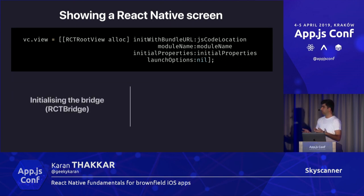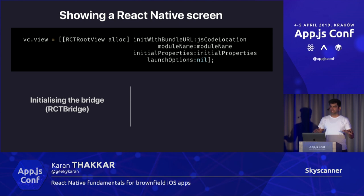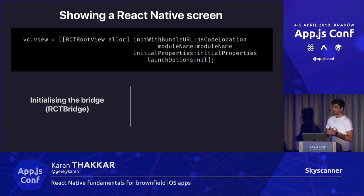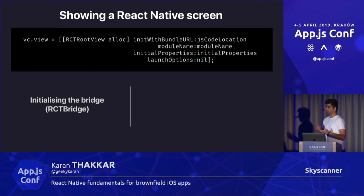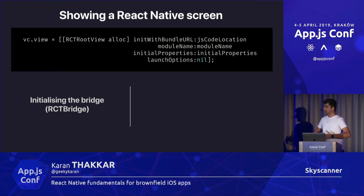Let's unpack what really happens under the hood when you write this line. It first starts by initializing the bridge. The bridge is a class called RCTBridge in React Native, and it controls everything in your React Native app: it loads your JavaScript, parses it, injects it into the VM, sets up the two-way communication between JavaScript and native, and sets up your native modules — the bridges you write to communicate between React Native and native. Because it does so many things, this is by far the most expensive process in your entire React Native life cycle.